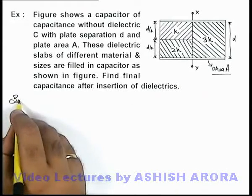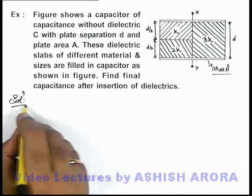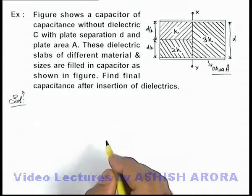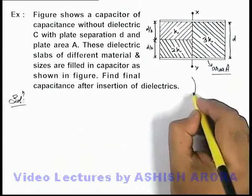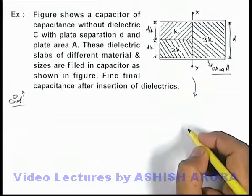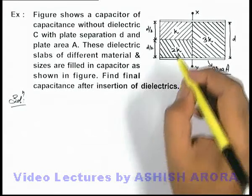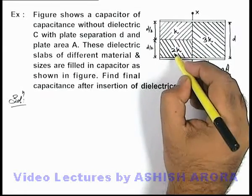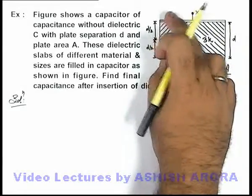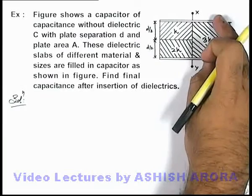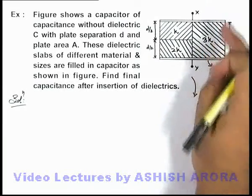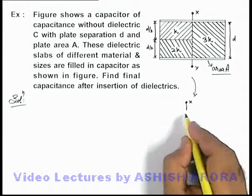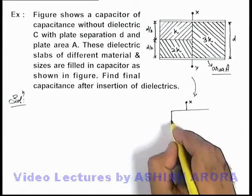As discussed in previous sections about the variation in capacitance due to insertion of dielectrics, the first thing we can do is draw its equivalent situation. The k and 2k dielectric system will behave as 2 capacitors in series, and this group will act as a parallel combination with the capacitor of dielectric 3k. We can draw the equivalent circuit like this.